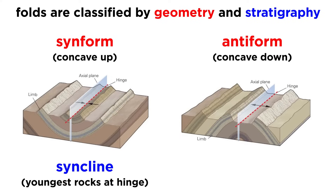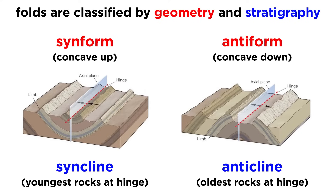When layered rocks are folded into a synform, the youngest rocks will usually be at the hinge of the fold, which is similar to the local maximum or minimum of a parabolic function. When this is the case, the fold is called a syncline. Anticlines have the oldest rocks at the hinge zone.